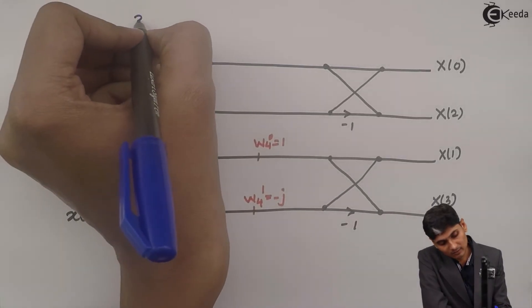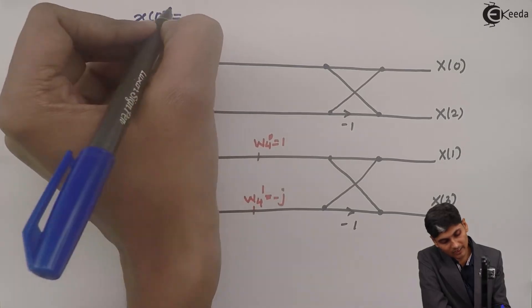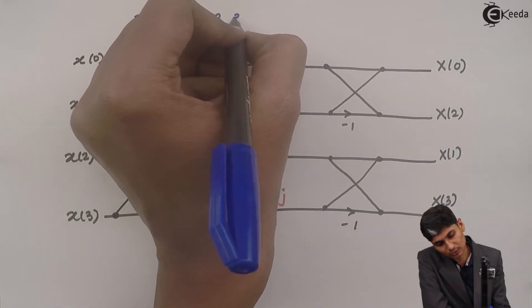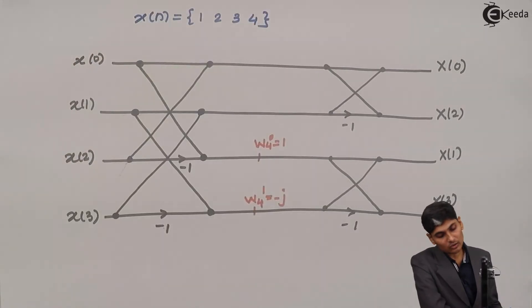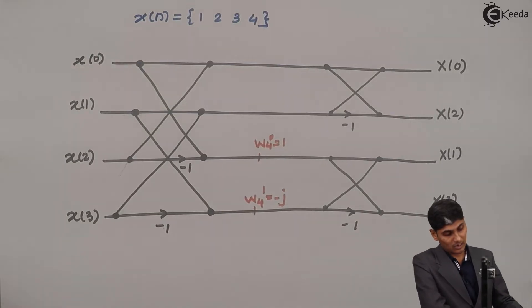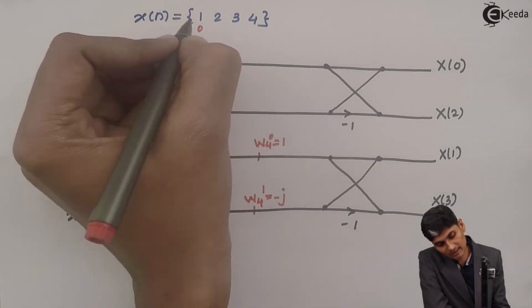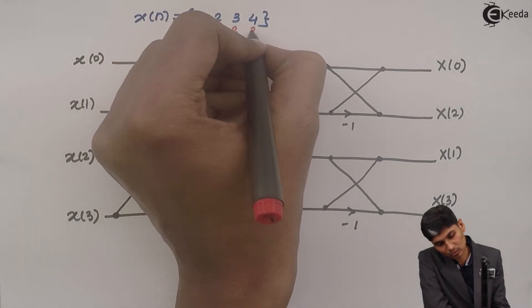Let us consider a problem x of n as 1, 2, 3, 4. So the given sequence is 1, 2, 3, 4. Now the value of n is 0, then 1, then 2, and then 3.